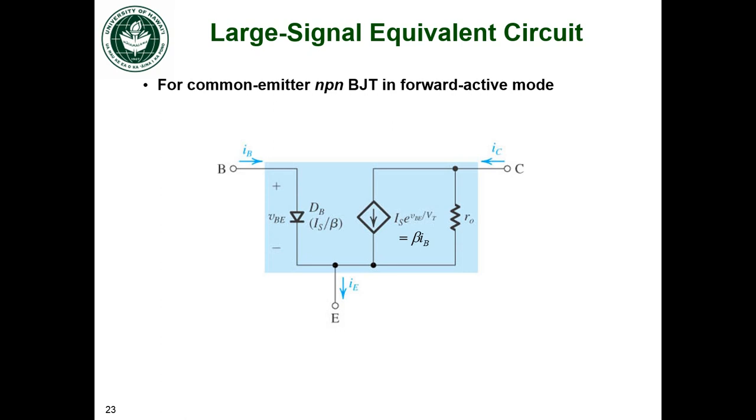A few more definitions of things for the BJTs. If I have a common emitter BJT in the forward-active mode, this will be my equivalent circuit that can replace that for large signals.